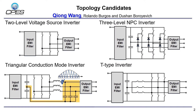For converter topology, we have selected four candidates including three hard switching topologies and one soft switching topology. They are two-level voltage source inverter, three-level neutral point clamped inverter, T-type inverter, and triangular conduction mode inverter. The latter is a soft switching topology. We use three capacitors to decouple the three phases, and the inductor current in each phase is shaped into a triangular shape to facilitate zero voltage switching.